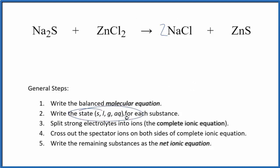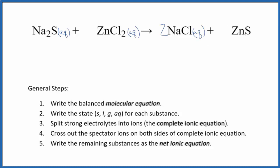Next, we write the states for each substance. Sodium compounds are very soluble — we're going to write AQ, that's going to dissolve and dissociate. Chlorides are also very soluble, and sodium chloride is going to be soluble. Zinc sulfide, though — if you look zinc sulfide up on a solubility table, you're going to find that this is a solid.